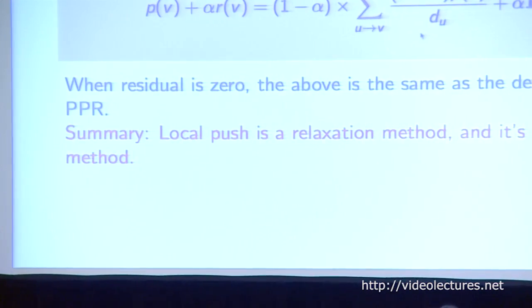The key property of the local push algorithm is called the invariance property. It is basically a flow equation satisfied by the random walk. When all the residuals are zero, this is the same as the definition of the personalized PageRank vectors. Local push is a relaxation method — you can think of it as a first-order method, and power iteration as a second-order method.